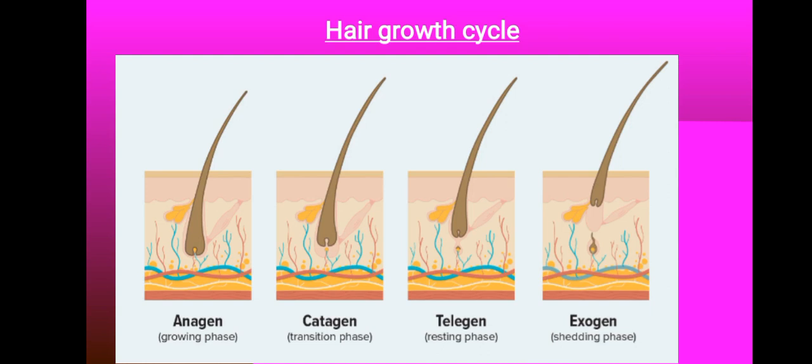The hair growth cycle has different stages. One of them is anagen, which is the growing phase. We have catagen, which is the transition phase. We have telogen, which is the resting phase. And we have exogen, which is the shedding phase.